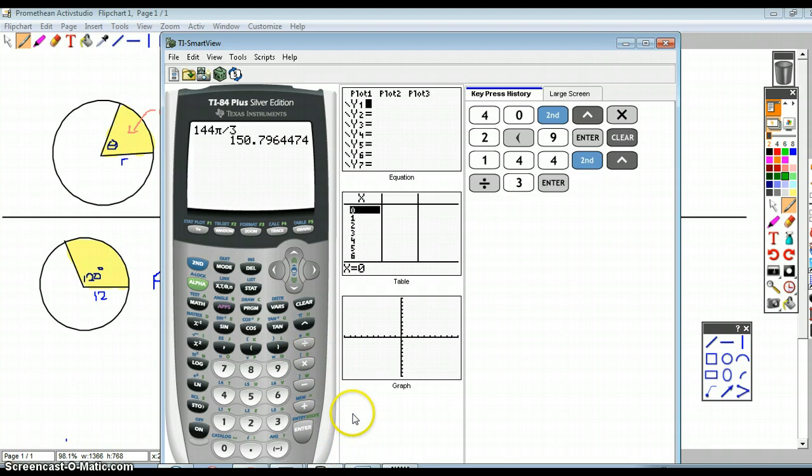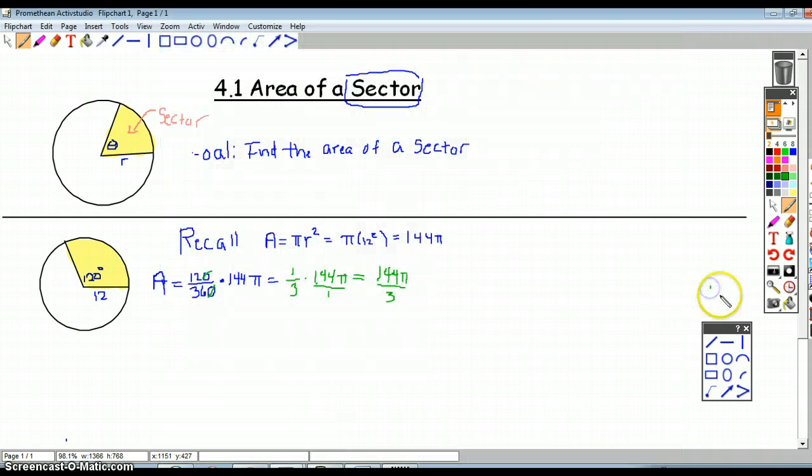Again, that central angle is telling us the fraction and helping us determine the fraction of the entire area that that sector is taking up, just like the central angle told us the fraction of the arc length or the length of the circumference that the arc length was taking up.